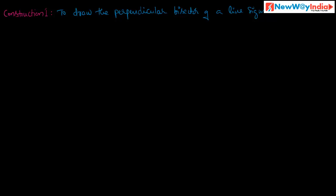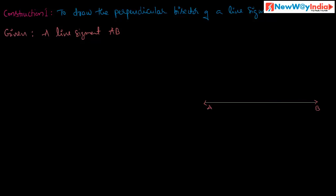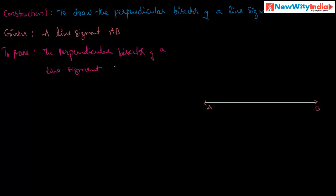Now, what is given here? First you have to write down the given data. Given: this is a line segment AB. Now what do we have to prove? We have to prove — that is, we are required to construct the perpendicular bisector of line segment AB.